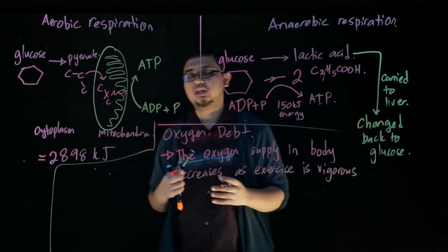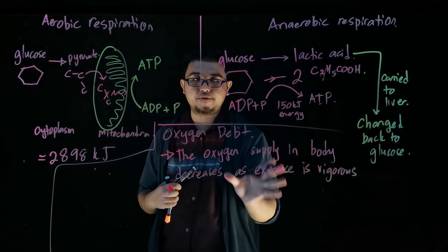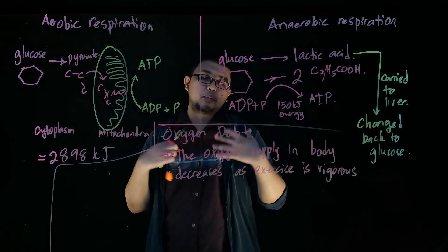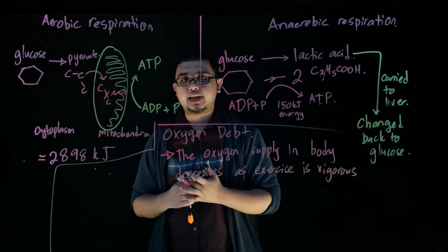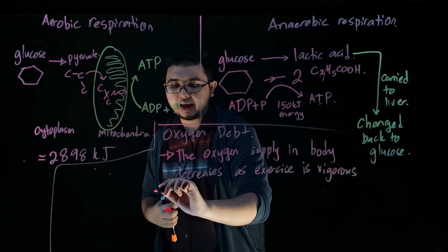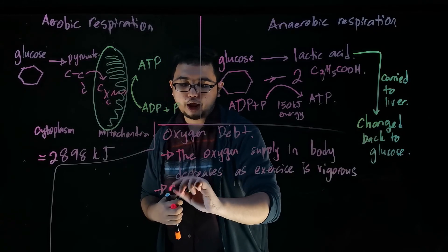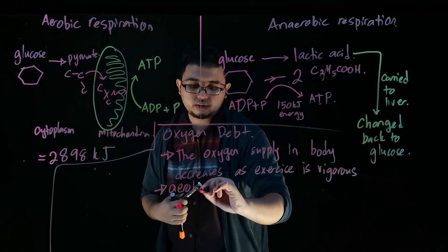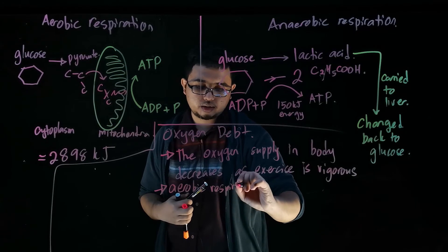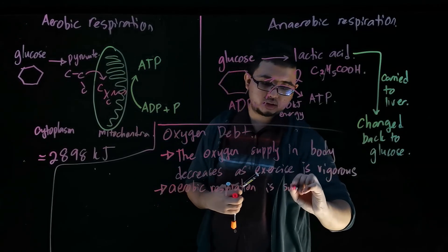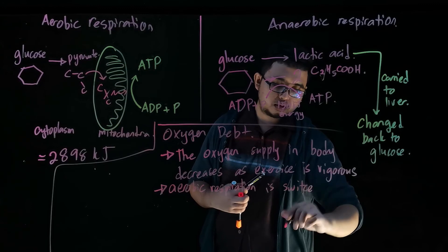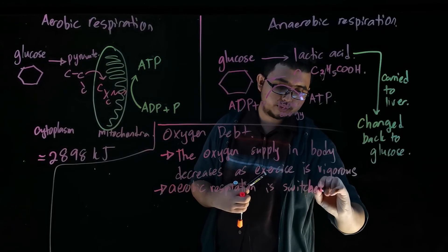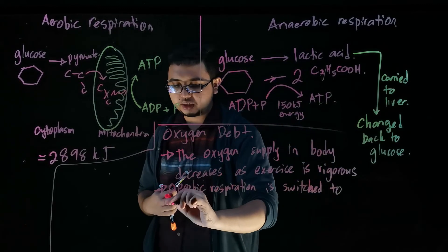You don't have enough oxygen in the body to supply for your muscles, but your body still requires that energy. So what they do is that the aerobic respiration is switched to anaerobic respiration.